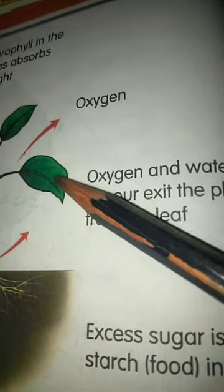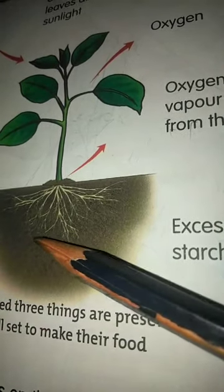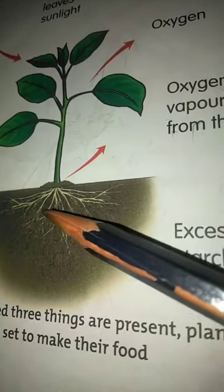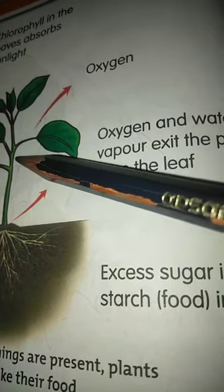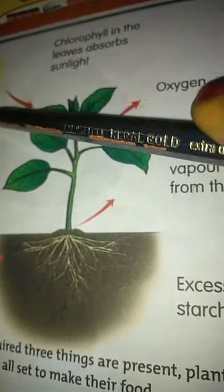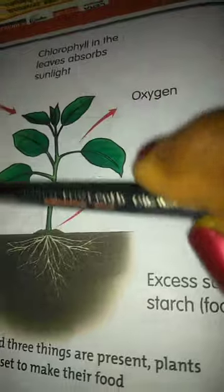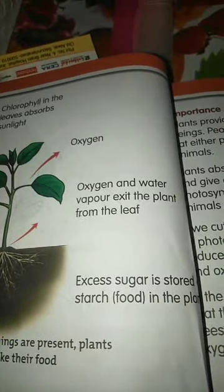The roots and the stem also help the leaves in the preparation of food. The root hairs absorb water and minerals from the soil, and the stem transports these substances up to the leaves and also carries food to various parts of the plant. Sunlight is also necessary for the preparation of food, and this process of making food in plants is known as photosynthesis.